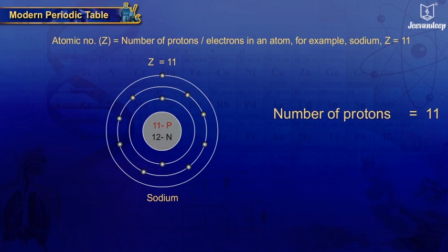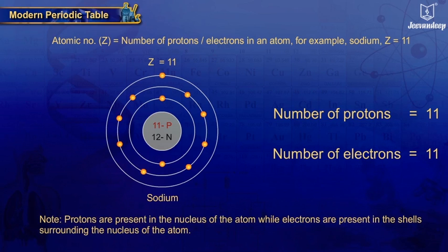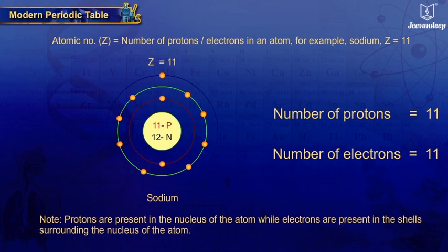Here we see number of protons equals 11, number of electrons equals 11. Note, protons are present in the nucleus of the atom while electrons are present in the shells surrounding the nucleus of the atom.